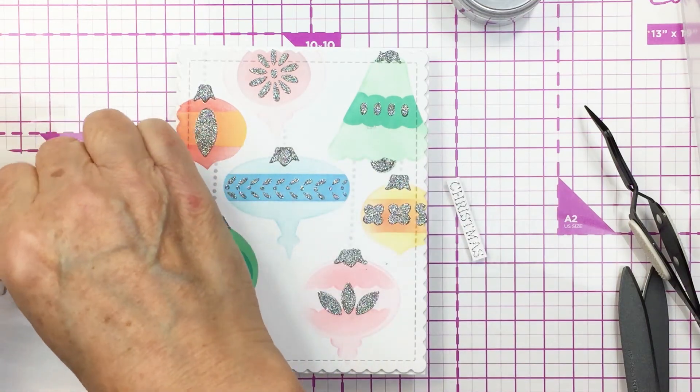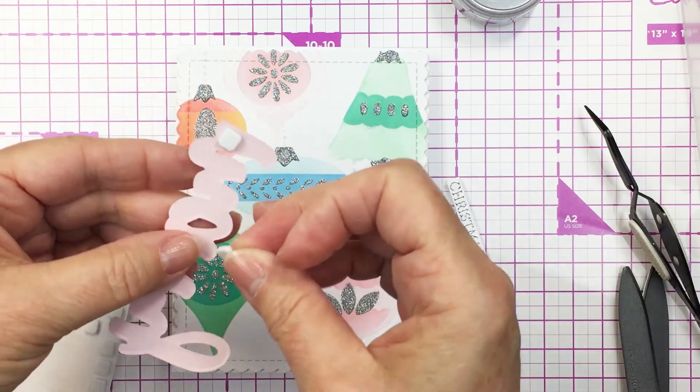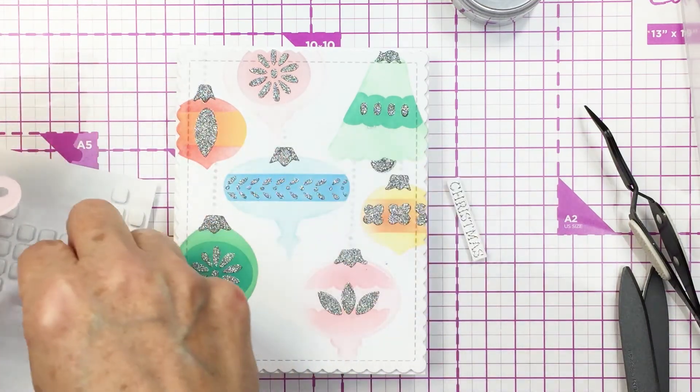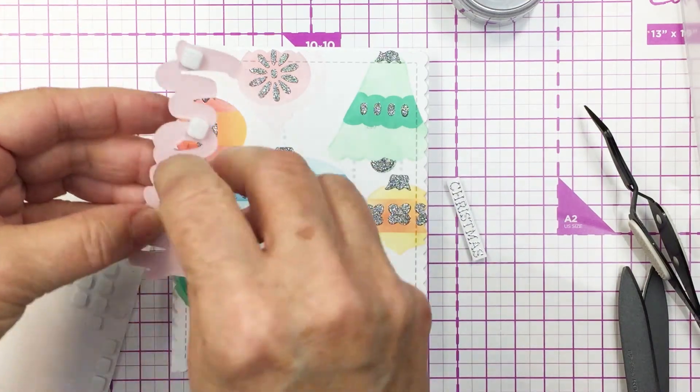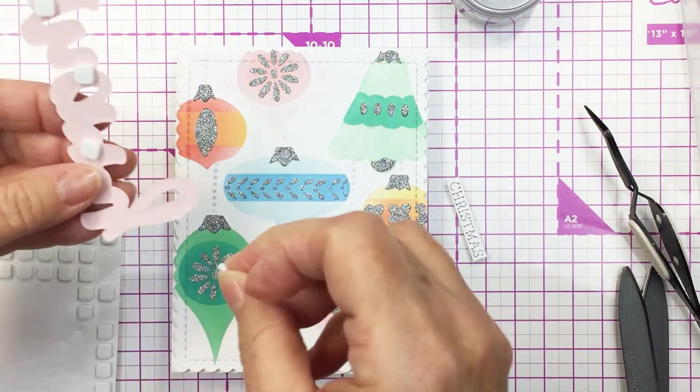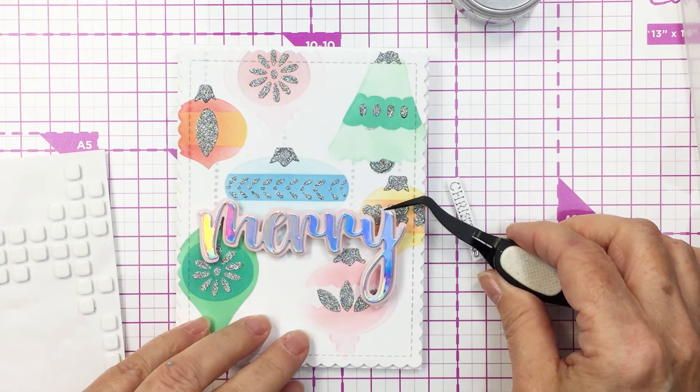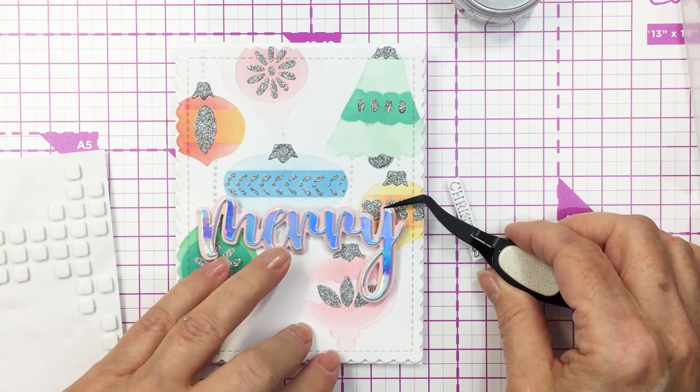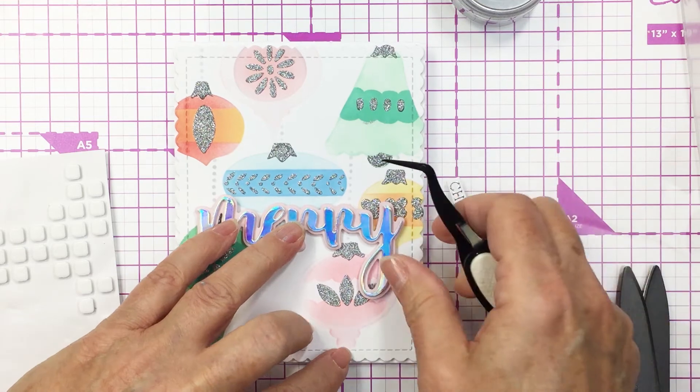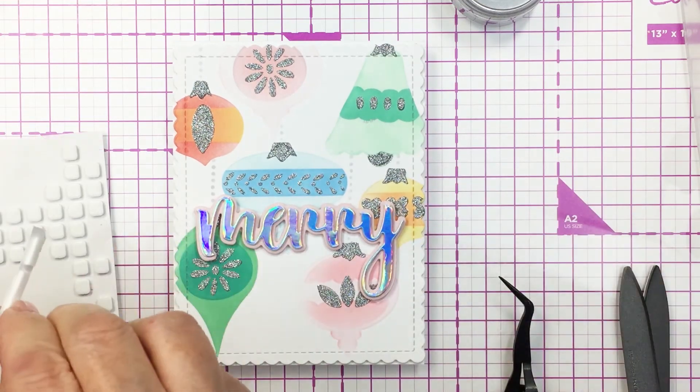I'm going to pop up that merry buzzword with some foam adhesive here and you'll just see me adding those foam squares onto the card. That is almost going to finish up the card. I will add the word Christmas just below the merry buzzword. I have also cut out that stenciled panel with my A2 scallop die from Honey Bee Stamps.